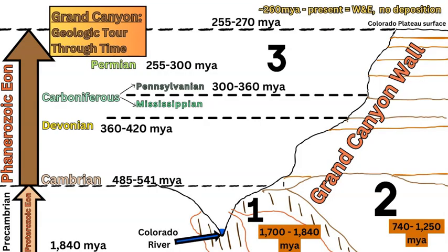Our geologic history of the Grand Canyon begins at the bottom by the river in the inner gorge. This is based on the three different rock sets — the three main rock sets of the Grand Canyon. The first rock set at the bottom, which is the oldest rocks in the Grand Canyon and the oldest rocks exposed on the Colorado Plateau, is the basement rocks: the basement igneous and metamorphic suites, which date between 1.7 to 1.84 billion years old. These include plutons and various dikes.